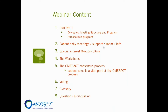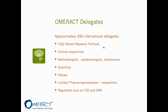The content covers OMERACT as a structure, the patient daily meetings, what a special interest group or workshop is. Martin will then talk about the OMERACT consensus process running throughout the meeting this year, followed by voting and the glossary. OMERACT is made up of approximately 200 people from around the world, 10% of whom are patients — so about 20 patients at every OMERACT conference.